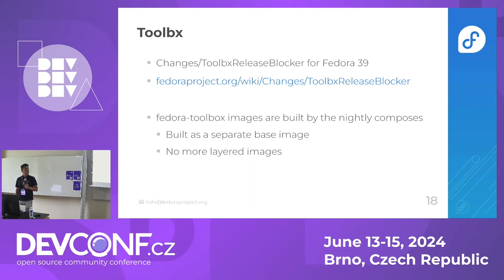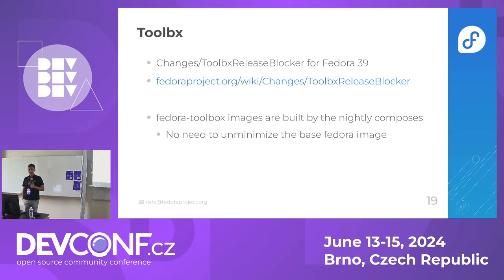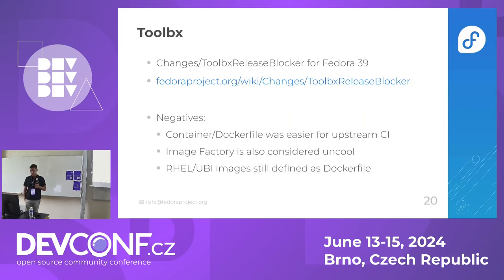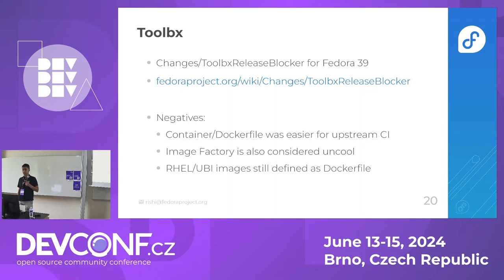Another change is that the images are no longer layered on top of the Fedora base image — they are now standalone images. This means we no longer need to un-minimize the Fedora image, which was optimized for server-side services with no locales and no documentation. The upside is that the images are built just like your ISOs are built, kept in sync and tested. The downside is that having them as Dockerfiles was easier to integrate into upstream CI, and Image Factory is also weakly maintained and considered uncool.